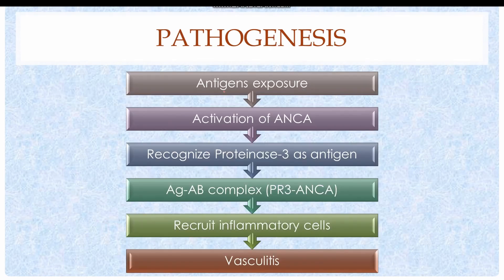Coming on to the pathogenesis, the disease typically occurs due to formation of antigen-antibody complexes. First, there is an antigen exposure — this antigen could be either derived from the environment such as an allergen, or from a microorganism. Exposure to the antigen results in the activation of ANCA antibodies in susceptible people. These ANCA antibodies are found against the antigen but they also recognize the proteinase 3 enzyme present on the surface of endothelial cells.